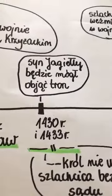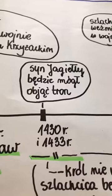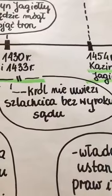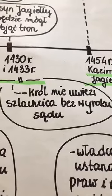Kolejne prawo Jagiełły: aby syn Jagiełły mógł zasiąść na tronie Polski, daje szlachcie prawo – król nie uwięzi szlachcica bez wyroku sądu. Jeżeli mamy jakiegoś szlachcica, który buntuje się przeciwko królowi, to król musi sądowo nakazać jego aresztowanie, potem sąd to rozstrzyga. Widać tutaj schemat: aby monarchia mogła pozostać na tronie, król nadaje kolejne przywileje.